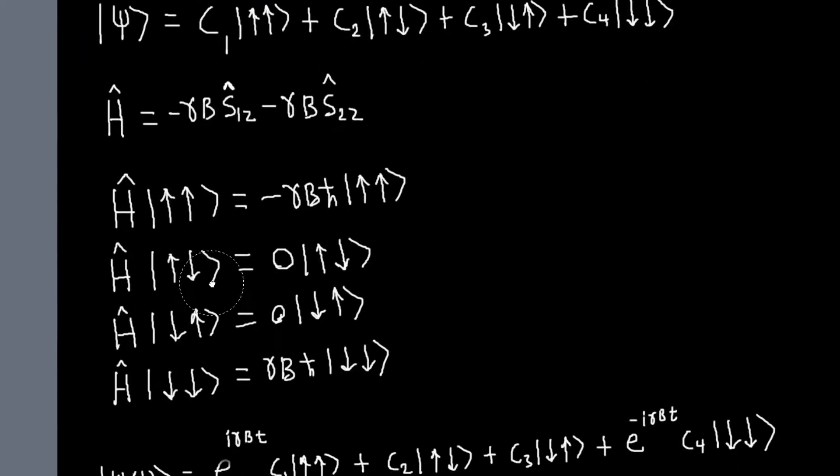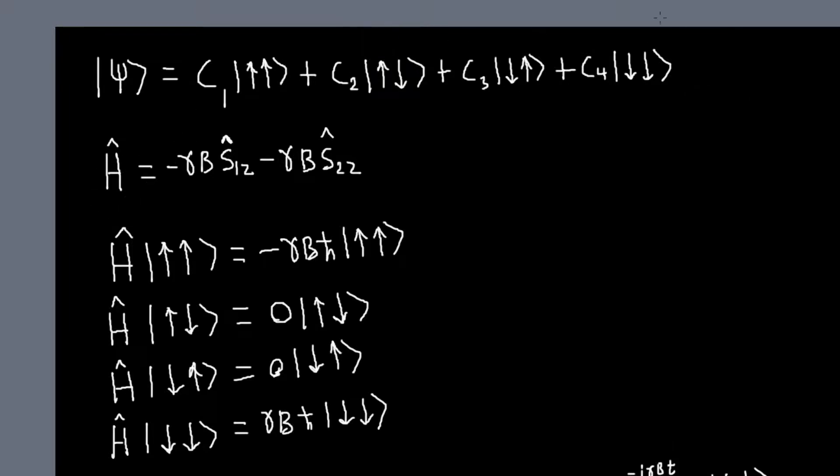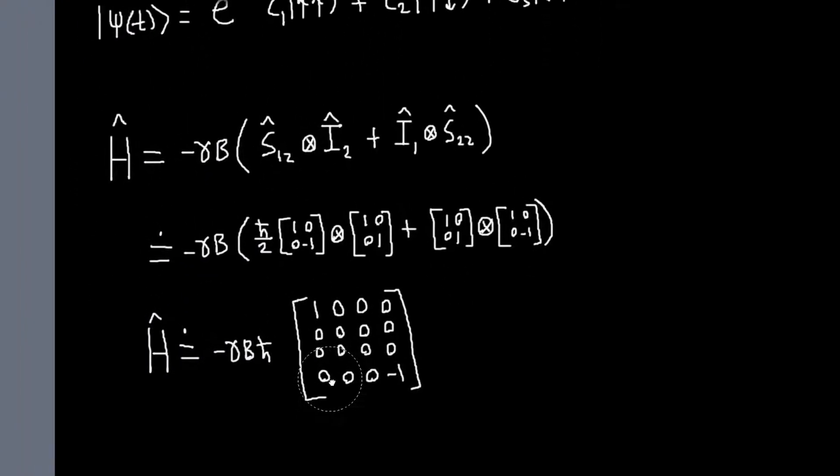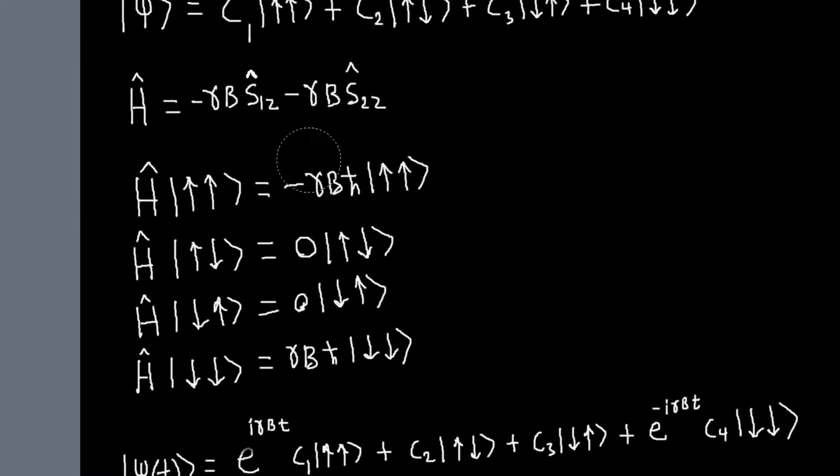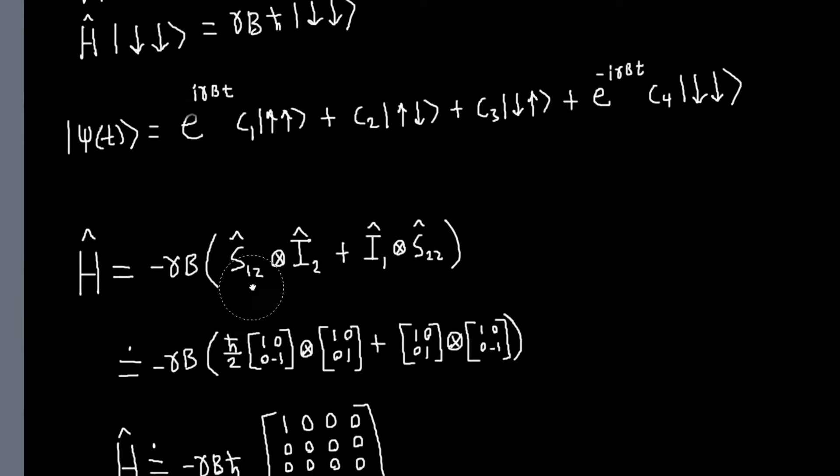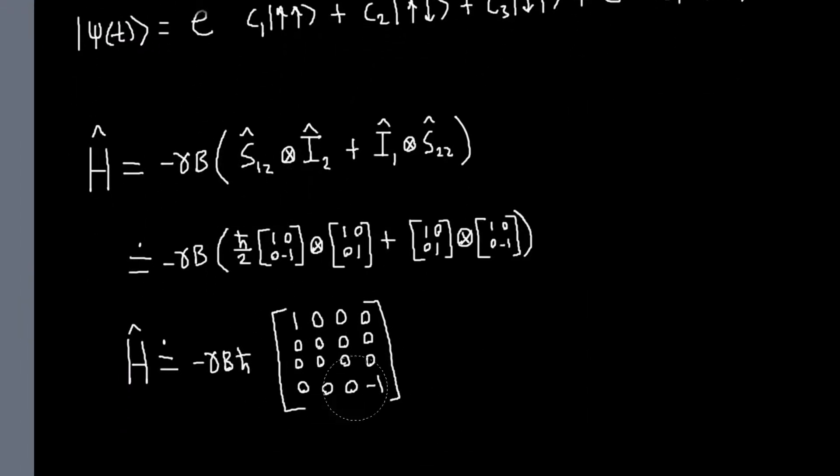When I represent the Hamiltonian in this basis, my matrix should be diagonal, and the diagonals are just going to be the eigenvalues. So, the diagonal should be minus gamma b h-bar, zero, zero, and gamma b h-bar, which, of course, that's what we have. Now, let's take a look.